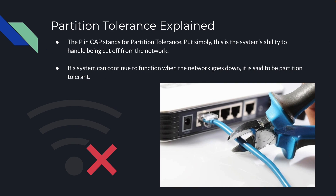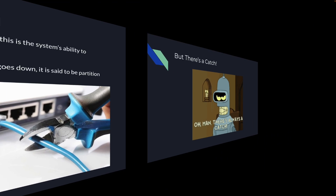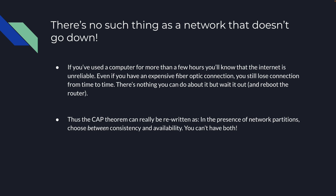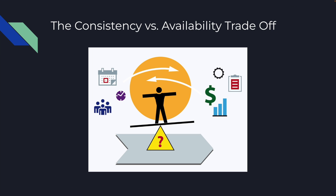Partition tolerance — the P in CAP — is the system's ability to handle being cut off from the network. If a system can continue to function when the network goes down, it is said to be partition tolerant. But there's a catch: there's no such thing as a network that doesn't go down. Even with expensive fiber optic connections, you're still going to lose connection from time to time. Thus, the CAP theorem can really be rewritten as: in the presence of network partitions, choose between consistency and availability. You cannot have both. This is the consistency versus availability trade-off.